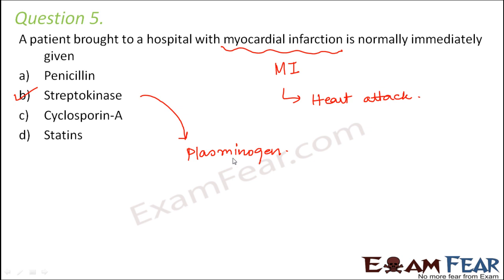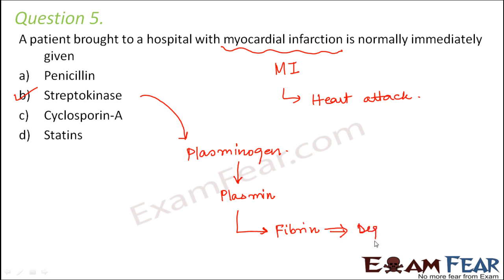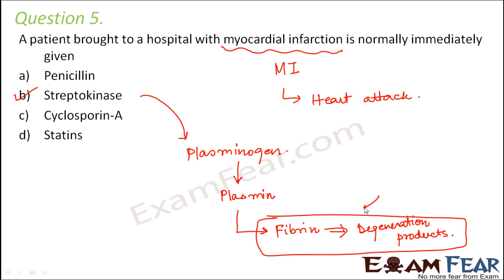Streptokinase activates plasminogen, which in turn activates plasmin. Plasmin breaks down fibrin polymers that are formed during blood clotting. These fibrin polymers are broken down into fibrin degradation products. This process of breaking down fibrin is known as fibrinolysis.